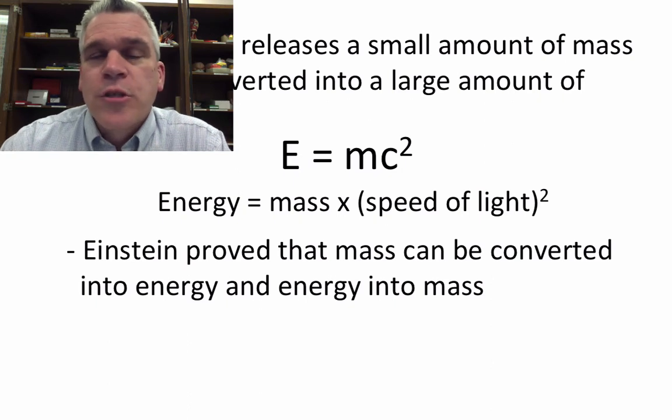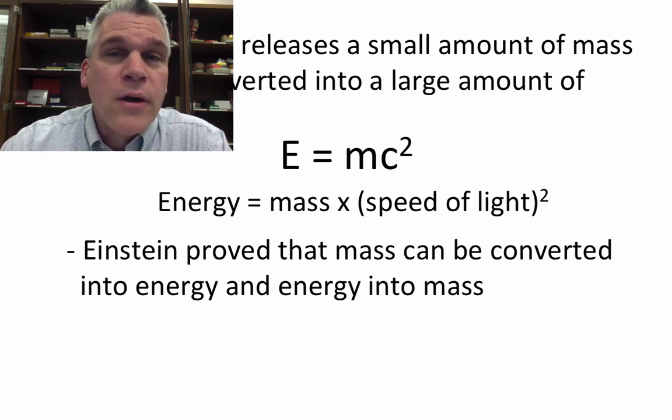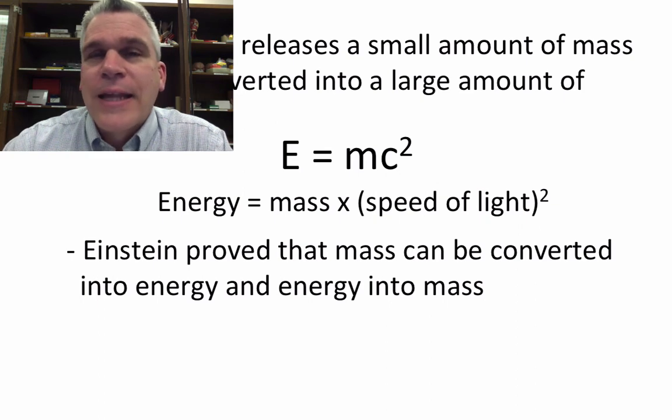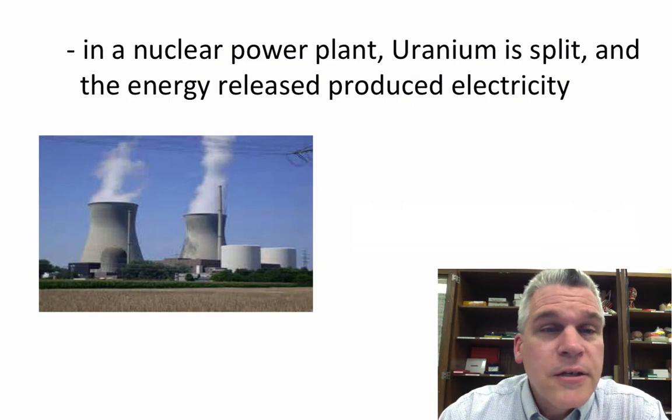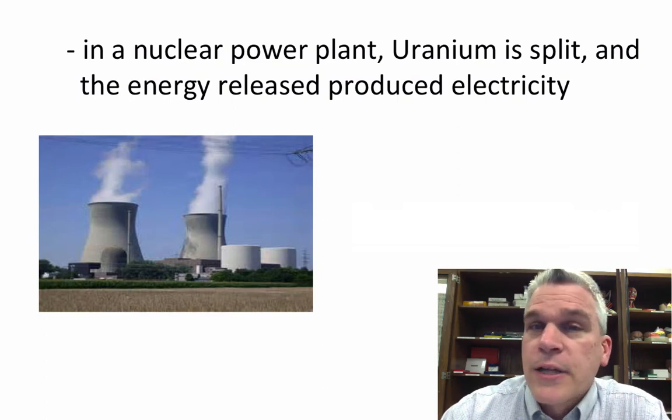Einstein proved that mass can be converted into energy and energy into mass. We've used this principle for a couple different purposes on the planet. One is to generate electricity. In a nuclear power plant, we use uranium and we split it. The energy released can produce electricity.